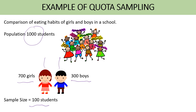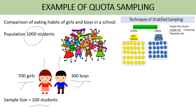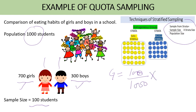The second step is to identify the proportion of each subgroup, which is 700 girls and 300 boys. We need to calculate the sample size from each subgroup. We will use the same formula as in stratified random sampling: sample size from a stratum equals sample size divided by population size, multiplied by the strata size. To calculate the sample from girls: 100 divided by 1000 multiplied by subgroup size 700, which equals 70.